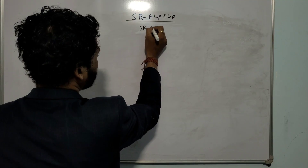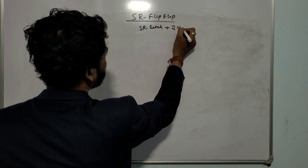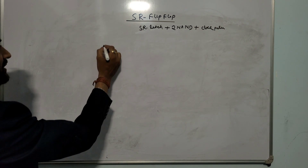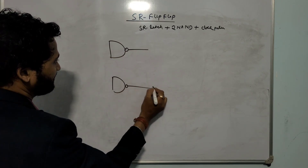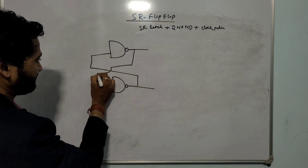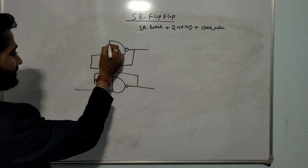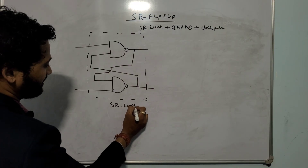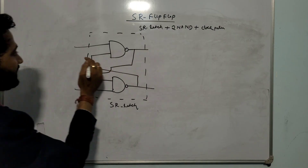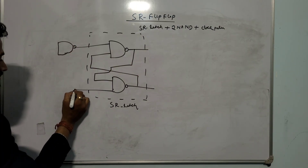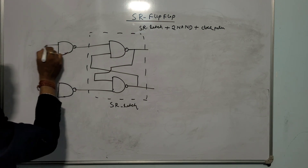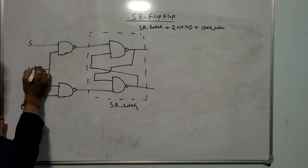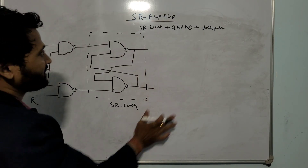SR flip-flop — what is it? SR latch plus 2 NAND gates and a clock pulse. Let me draw the circuit diagram. This is the SR latch. We need 2 more NAND gates. Here are the 2 NAND gates. This terminal is S and this terminal is R — connect them and give the clock pulse. That is the circuit diagram of the SR flip-flop.